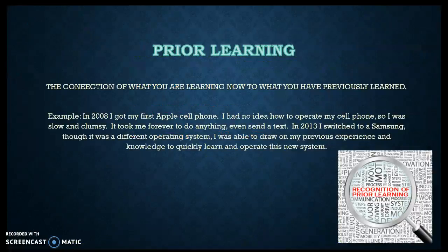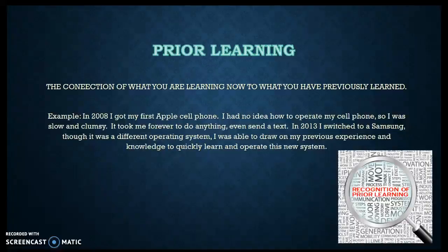A great example of prior learning: in 2008 I bought my first smartphone — an Apple phone. At that point I had no idea how to operate a smartphone, so I was slow and quite clumsy. It took me forever to do anything — create an email, write a text. In 2013 I switched from an Apple phone to a Samsung. Even though it's a different operating system, I was able to draw on my previous experience with my Apple phone to gain quick knowledge and transition quickly to the Samsung. That's prior learning.